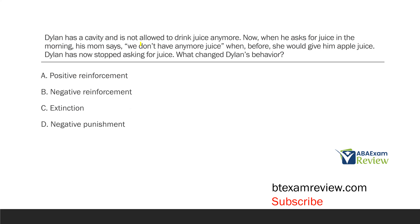Dylan has a cavity and is not allowed to drink juice anymore. Now when he asks for juice in the morning, his mom says we don't have any more juice — whereas before she would give him apple juice. Dylan has now stopped asking for juice. What changed Dylan's behavior? Dylan's got a cavity and can't drink juice. Before, when he asked for juice, mom would give it to him. Now she says we don't have any more juice, so Dylan is no longer receiving juice and has stopped asking for it. Dylan was once reinforced for asking for juice — now he's not.